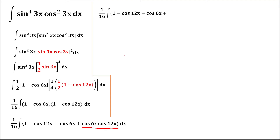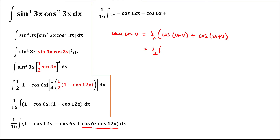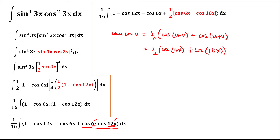For the term cos(6x)·cos(12x), we use the product-to-sum identity: cos(u)·cos(v) = ½·[cos(u − v) + cos(u + v)]. With u = 12x and v = 6x: cos(12x − 6x) = cos(6x) and cos(12x + 6x) = cos(18x). So cos(6x)·cos(12x) = ½·(cos(6x) + cos(18x)), times dx.